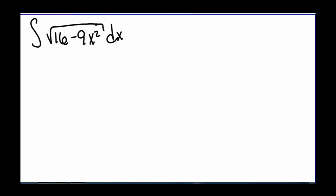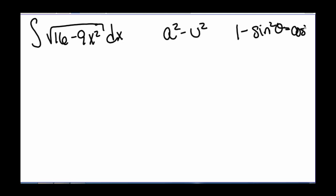Here we have something of the form a squared minus u squared. And that tells me that I want to use the identity 1 minus sine squared theta equals cosine squared theta. So that's the identity that we're trying to match this up with.